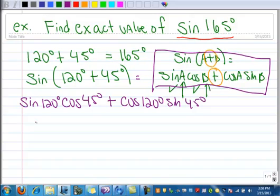Sine of 120 is √3/2 times √2/2 plus, and the cosine of 120, well that's -1/2, times √2/2.